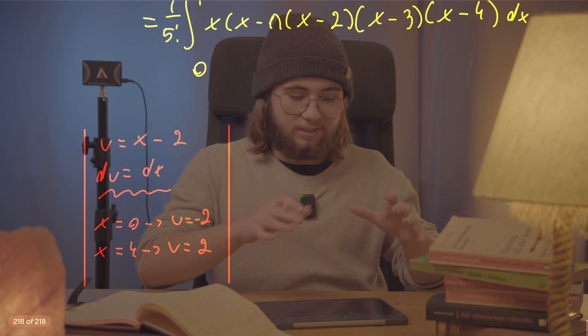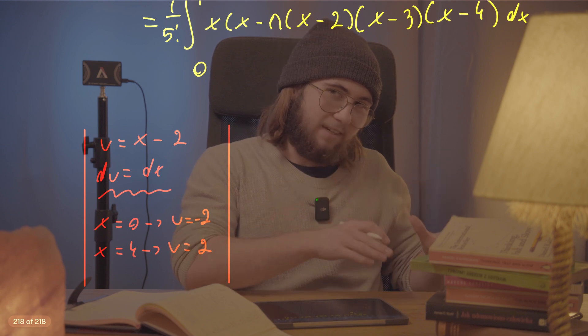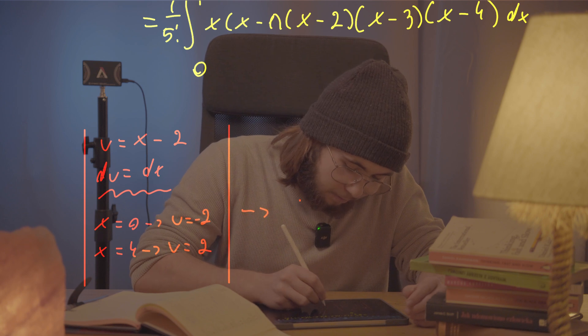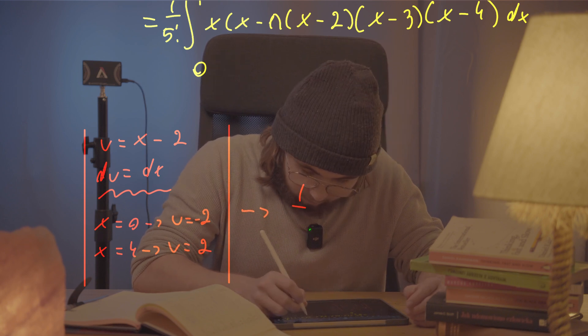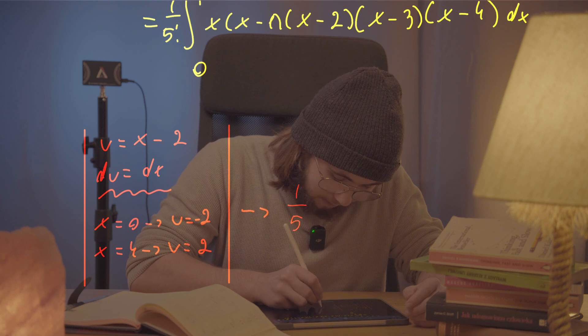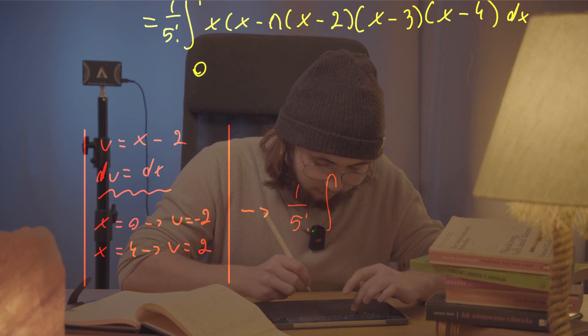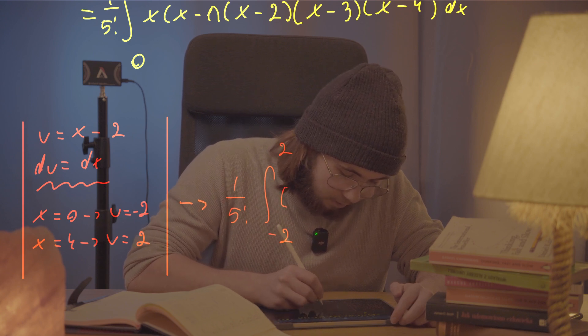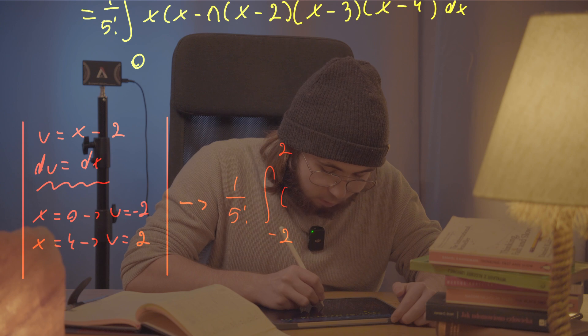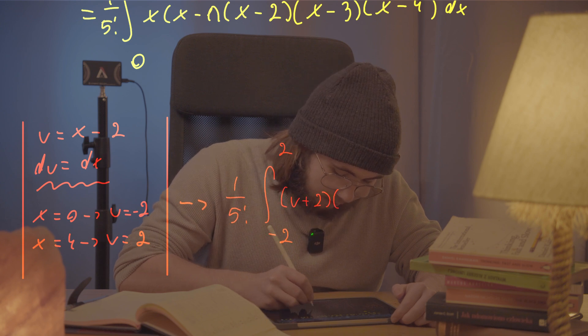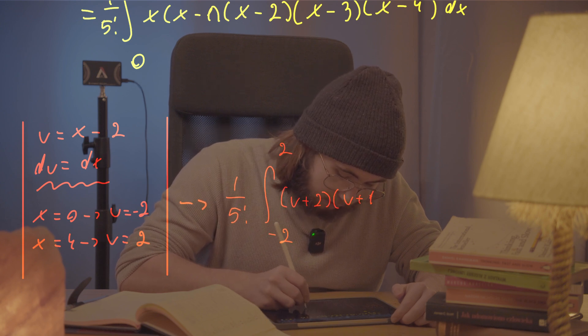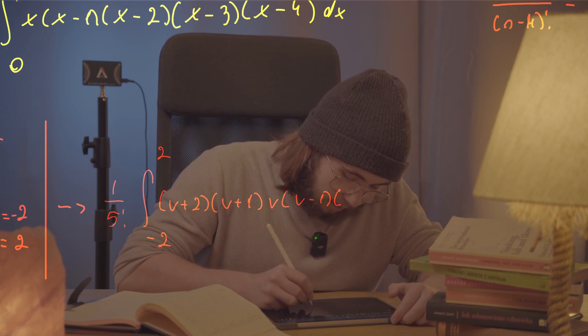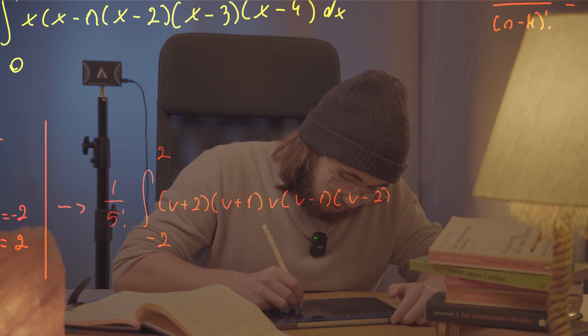And so what is this u sub gonna give us? Well, the integral is gonna become one over five factorial, from negative two up to two of u plus two, that was x, then u plus one, that was x minus one, and now times u, now times u minus one, and then u minus two, that's gonna be all du.